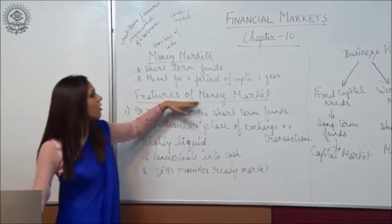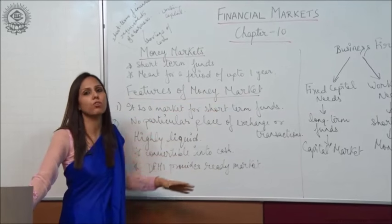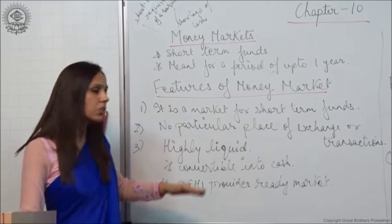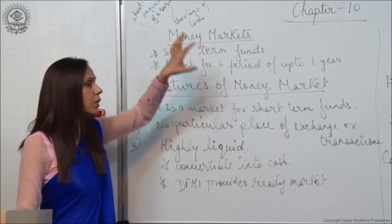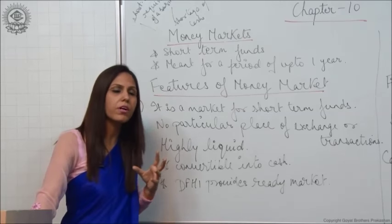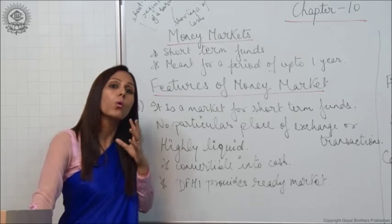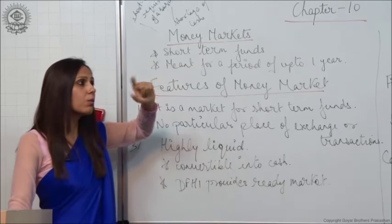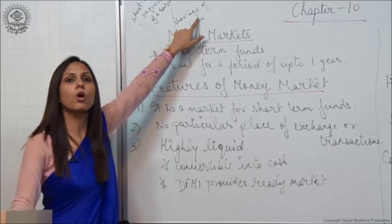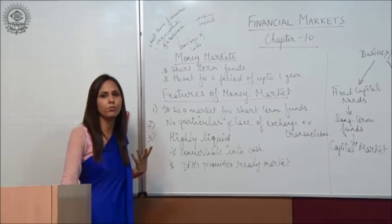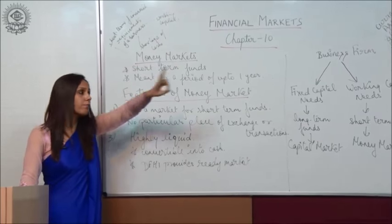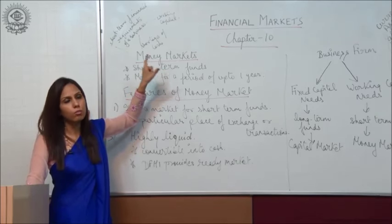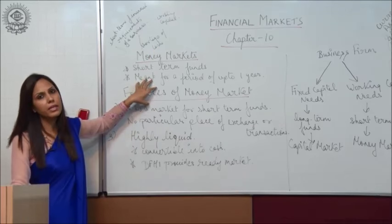Now let us come to the features of money market. What are the distinct features of money market? The first one is it is a market for short-term funds. This particular market deals with funds which are generally meant for a period of up to 1 year. Firms require money for shortage of cash or for fulfilling the need of working capital, and those needs are satisfied by the money market.